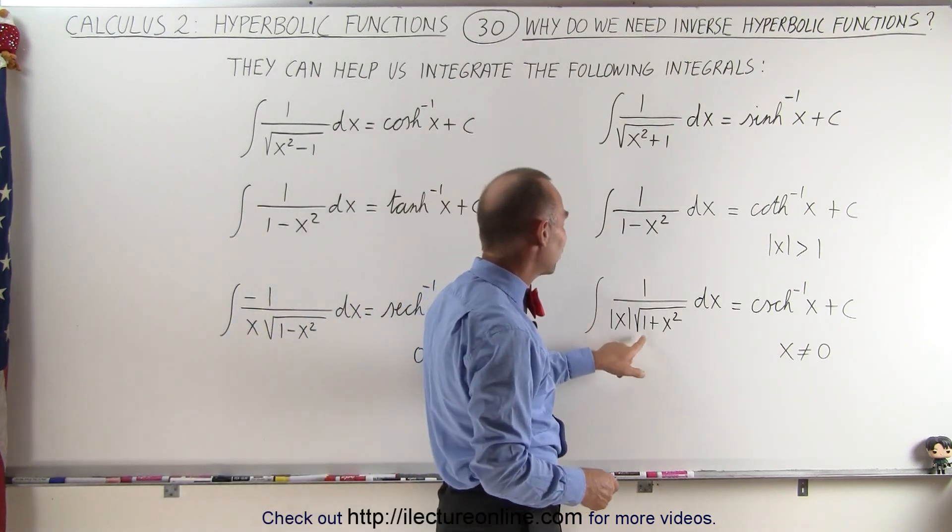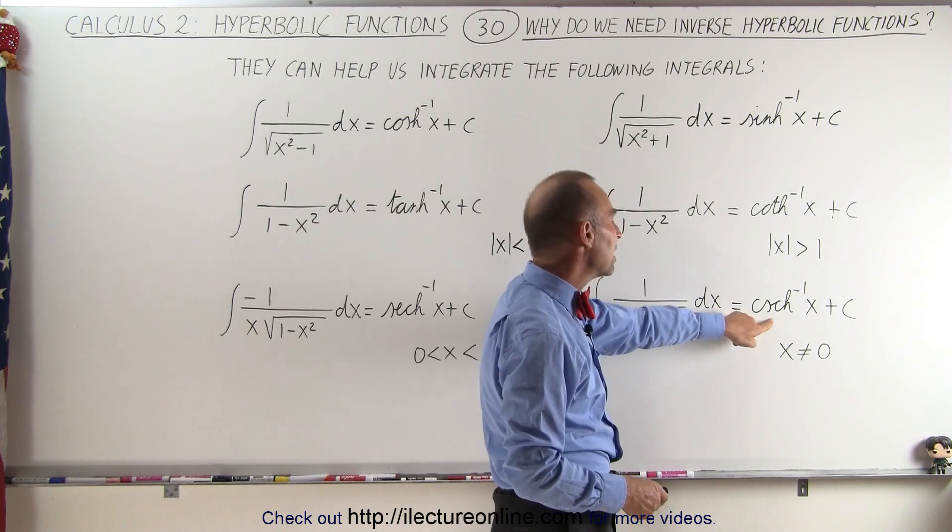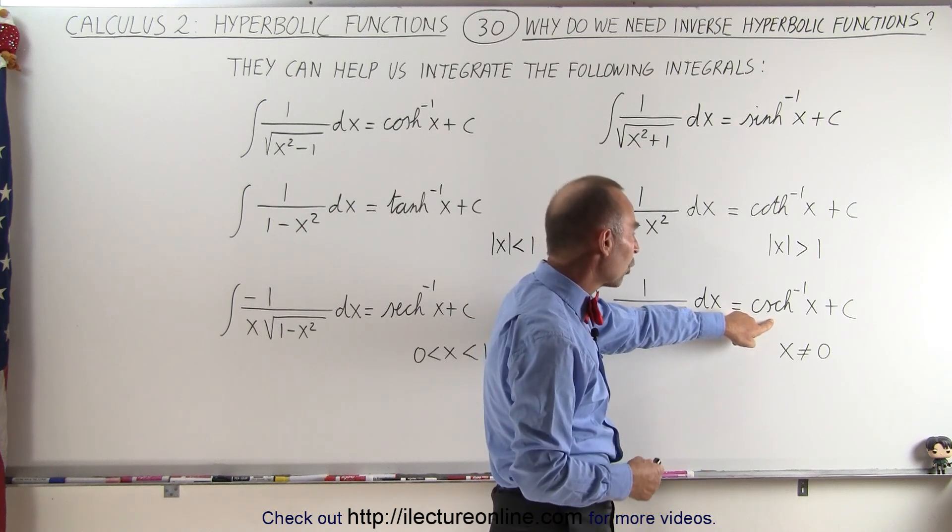And 1 over x times the square root of 1 plus x squared becomes the inverse hyperbolic secant.